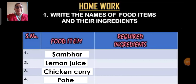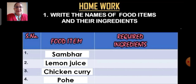Now for homework, children, write this in your science notebook. The question is: write the names of food items and their ingredients. Draw a table with two columns — food items and required ingredients. For example, to make sambar you require pulses, spices, different vegetables, salt, oil and tamarind.